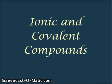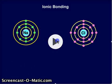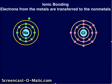Ionic and covalent compounds. Ionic bonding is where electrons from the metals are transferred to the non-metals.